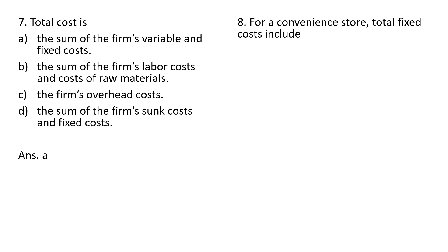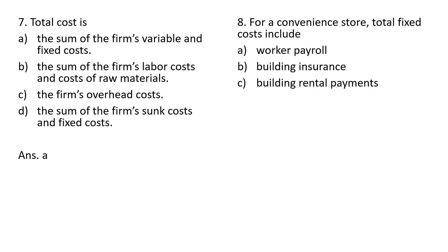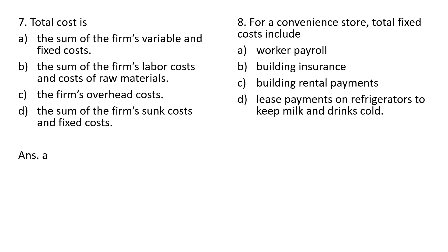Question eight: for a convenience store, total fixed costs include worker payroll — no, that is incorrect; that would be a variable cost. Building insurance — that is correct. Building rental payments — that is correct. Lease payments on refrigerators to keep milk and drinks cold — that is correct. So answer choice E is correct: B, C, and D are the correct answers.